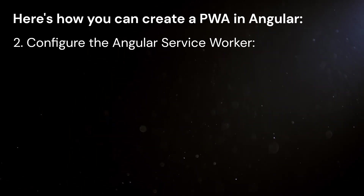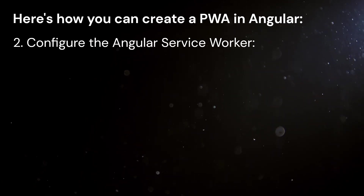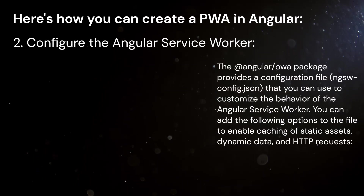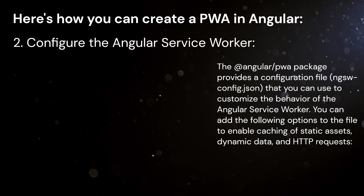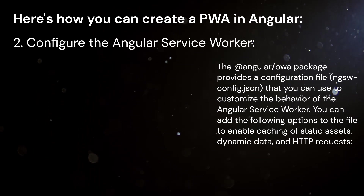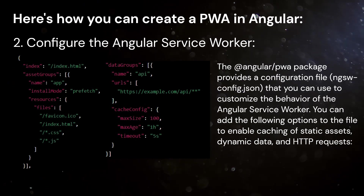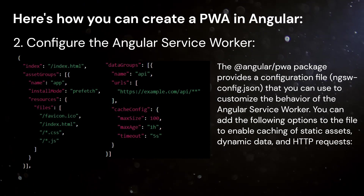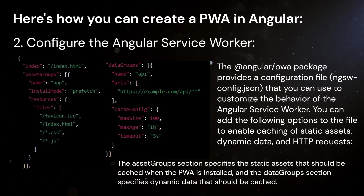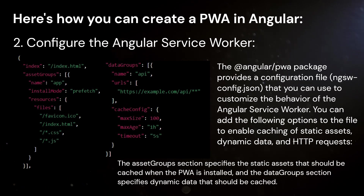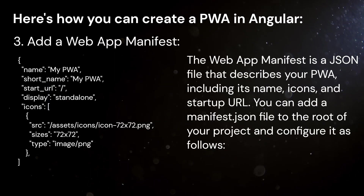Second, configure the Angular service worker. The @angular/pwa package provides a configuration file, ngsw-config.json, that you can use to customize the behavior of the Angular service worker. You can add the following options to the file to enable caching of static assets, dynamic data, and HTTP requests. The Asset Groups section specifies the static assets that should be cached when the PWA is installed, and the Data Groups section specifies dynamic data that should be cached.